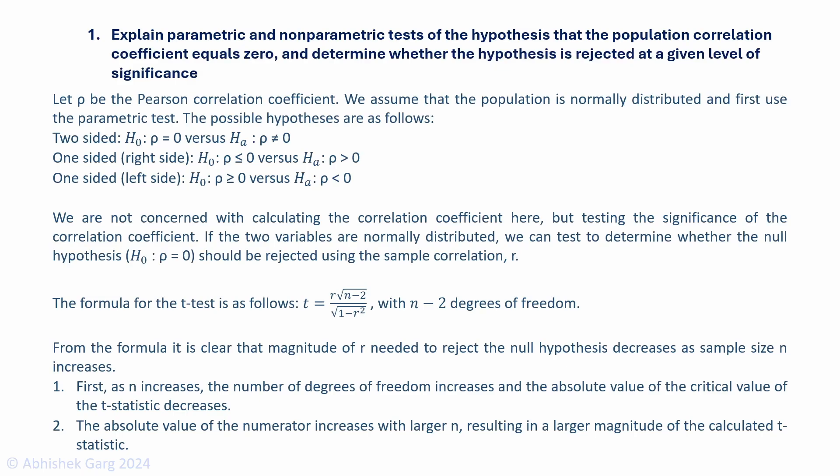We are concerned with the test of Population Correlation Coefficient. Let ρ be the Pearson Correlation Coefficient. Our two-sided hypothesis has null hypothesis ρ = 0 and alternate hypothesis ρ ≠ 0. For one-sided tests, H₀: ρ ≤ 0 versus Hₐ: ρ > 0 on the right side, and H₀: ρ ≥ 0 versus Hₐ: ρ < 0 on the left side.